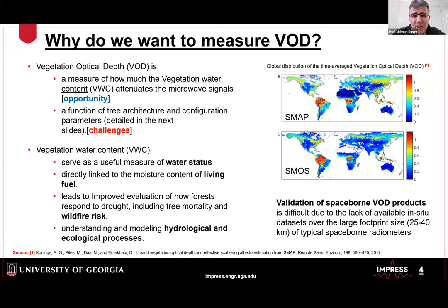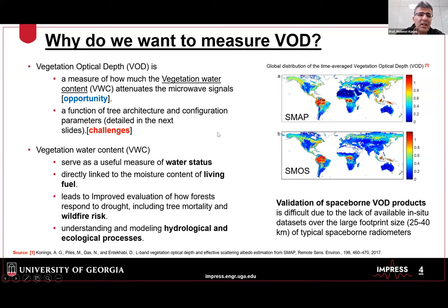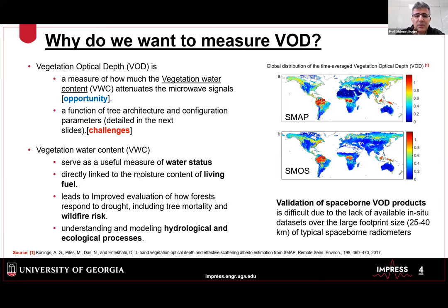Let's start with motivation. Vegetation optical depth (VOD) is a measure of how much vegetation water content attenuates microwave signals, and the goal is to retrieve that vegetation water content. However, VOD itself is a function of tree architecture and configuration parameters, which poses challenges. If you can solve this problem, vegetation water content is useful: it's directly linked to moisture content of living fuel, important for predicting wildfire risk, and applicable in hydrological and ecological processes and data assimilation.